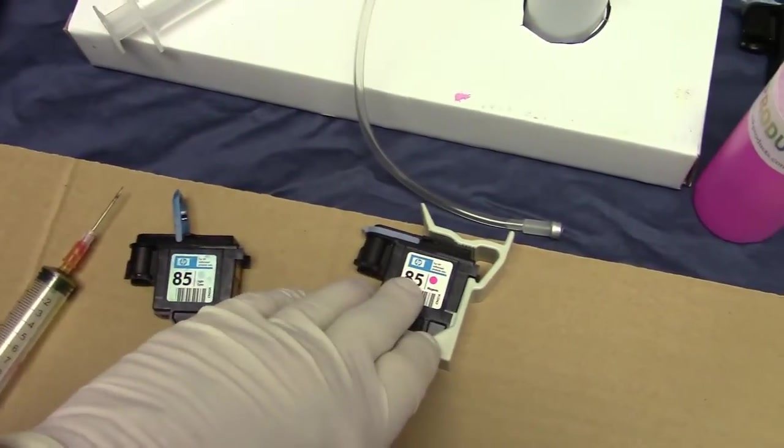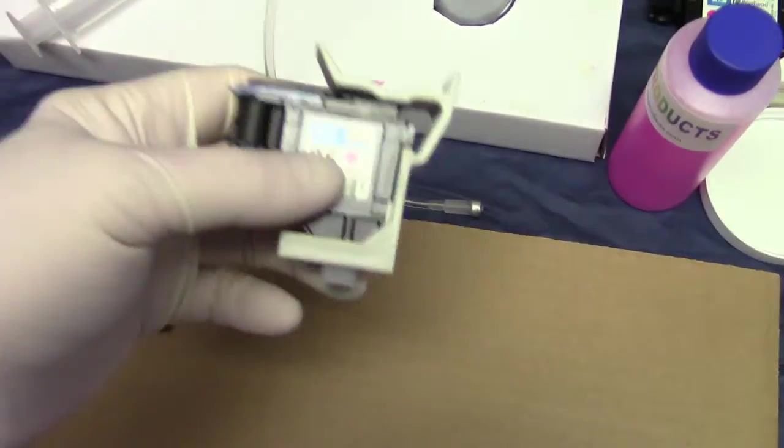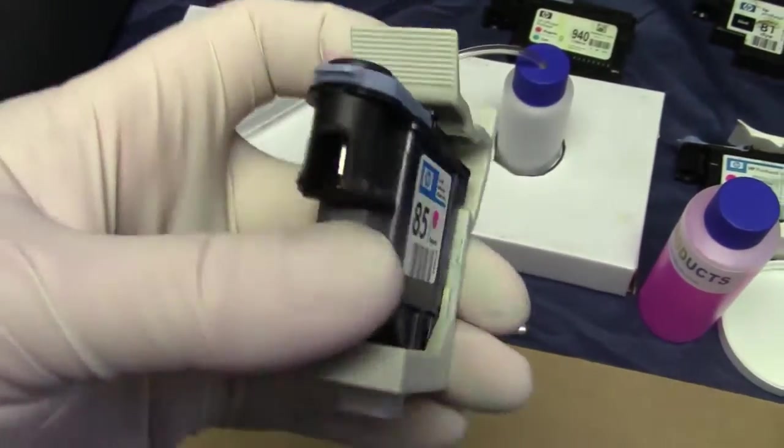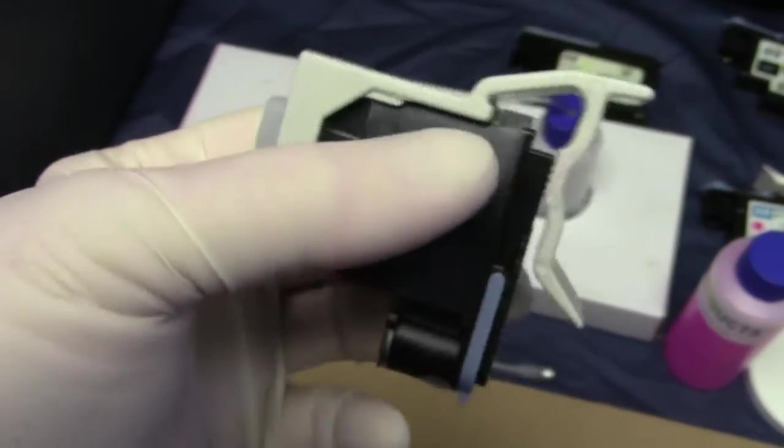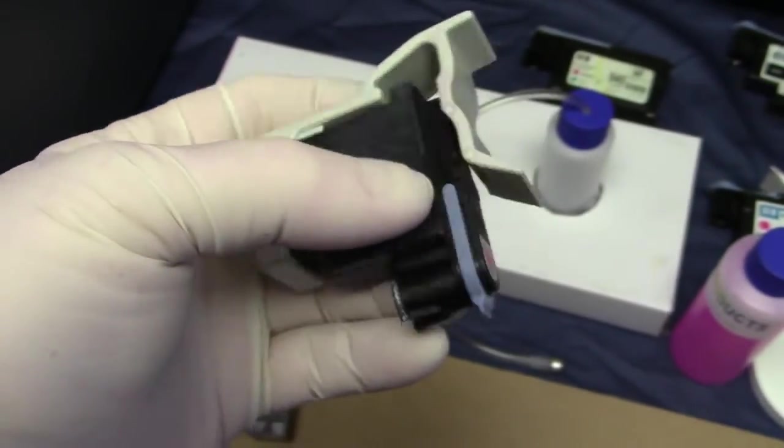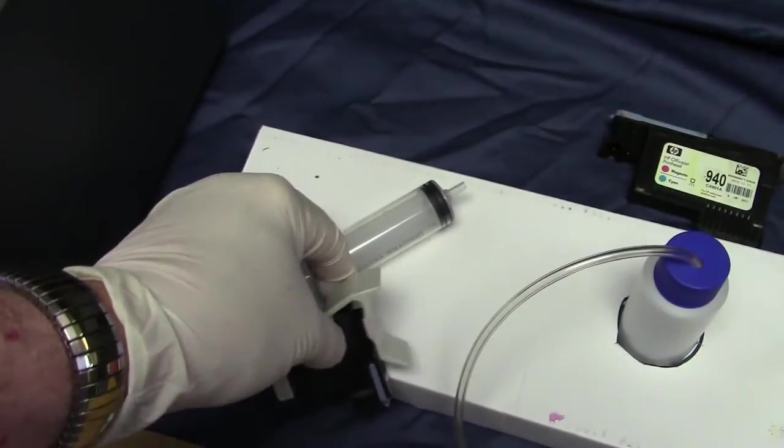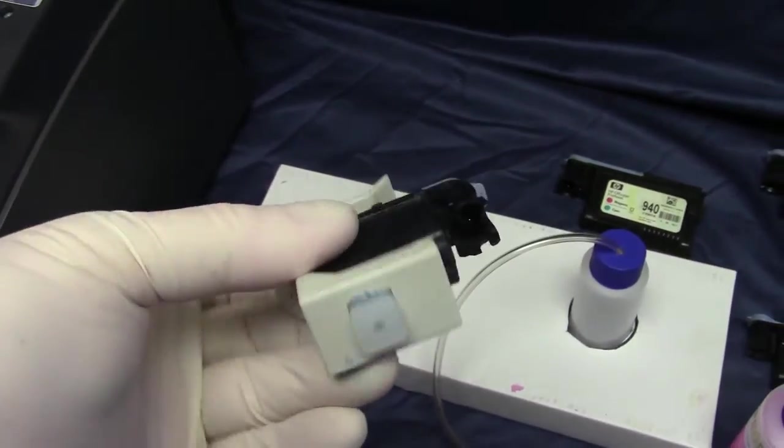You're going to snap it in. The tool just snaps right in. You want to make sure the back is even here, and then you're going to get a larger syringe to create the vacuum.